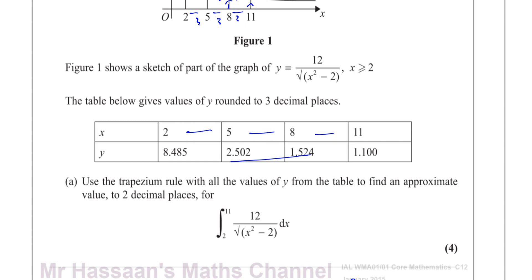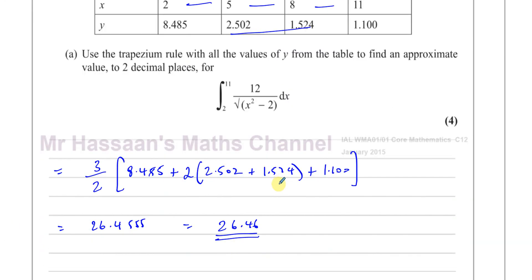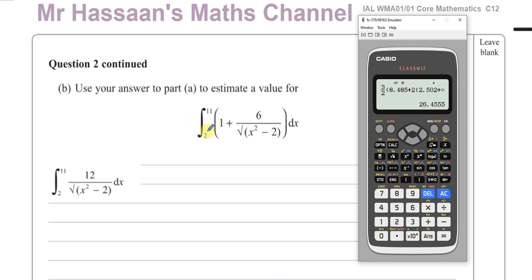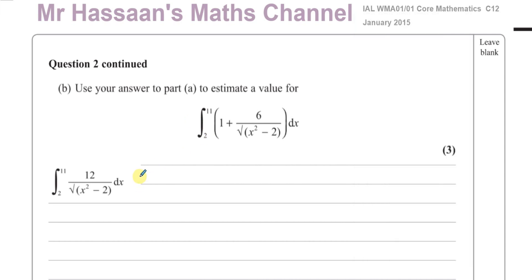Now part B is a very common type of question. Our value from part A was 26.4555, which we round to 26.46. Part B says: use your answer to part A to estimate a value for a new integral. They don't want you to apply the trapezium rule all over again with a new table of y values — they want you to use the answer from part A to find an estimate of this new expression.